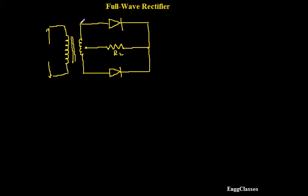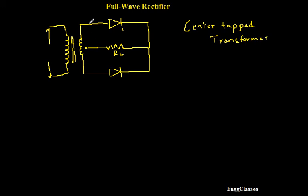I call this resistor RL. This transformer has three leads, and hence it is called a center tapped transformer. A half wave rectifier was implemented using a normal transformer, whereas to implement a full wave rectifier we need a center tapped transformer. The difference is that a normal transformer has two leads, whereas a center tapped transformer has three leads. One lead goes to diode D1, another lead goes to diode D2, and the third lead goes to the resistor RL. The cost of a center tapped transformer is generally much higher than a normal transformer. The input is a sinusoidal signal.